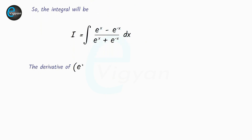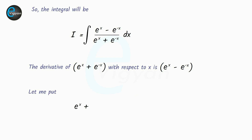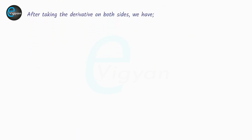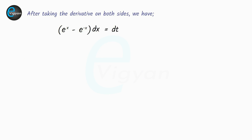Here the derivative of e raised to the power x plus e raised to the power minus x with respect to x is e raised to the power x minus e raised to the power minus x, and hence we can use substitution method to solve this question. Let's solve it. Let me put e raised to the power x plus e raised to the power minus x equal to t, that is we have put the denominator equal to t. After taking the derivative on both sides we have e raised to the power x minus e raised to the power minus x dx equal to dt.